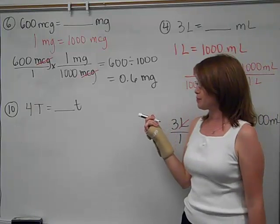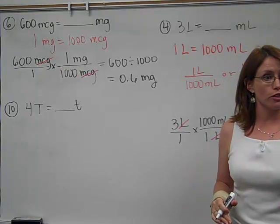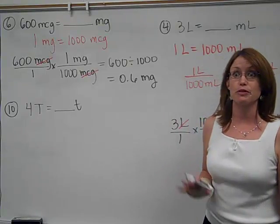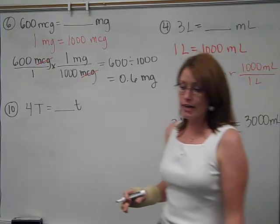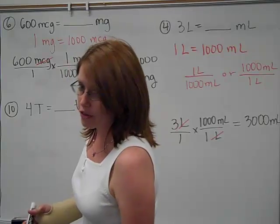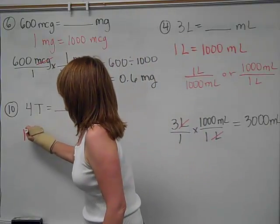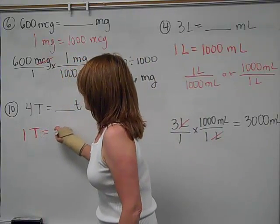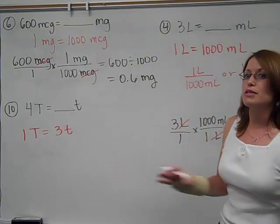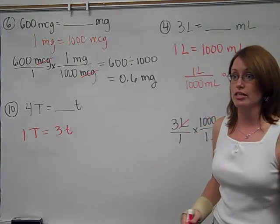Number 10. 4 tablespoons equals how many teaspoons? Now this is a household number. If you do any kind of baking or cooking, you've probably run across teaspoons and tablespoons all the time. So look through the household section. And this would also be volume. What's your conversion that you would use here? 1 tablespoon is 3 teaspoons. So capital T is tablespoon. Lowercase t is teaspoon. Please don't change it to TBA or TSP. We're only going to use the ones on the sheet.